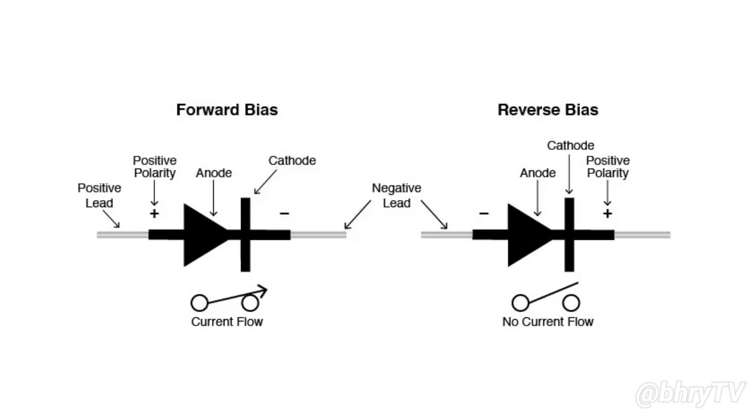Diodes have polarity determined by an anode positive lead and cathode negative lead. Most diodes allow current to flow only when positive voltage is applied to the anode.